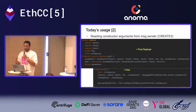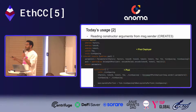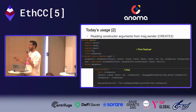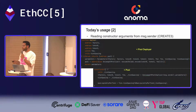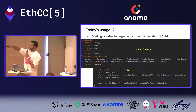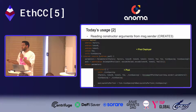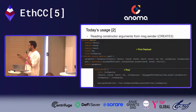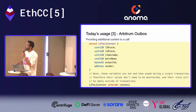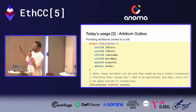A more esoteric usage: we use transient storage to make the code hash of a Uniswap pool a constant, which makes it significantly cheaper to compute the address of a pool on-chain. The deployer sets some parameters as constructor arguments, deploys the pool, and then deletes those parameters from storage.